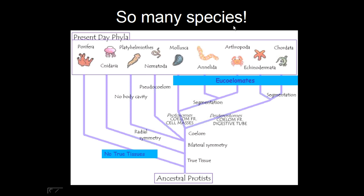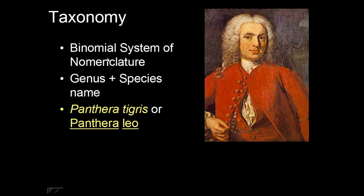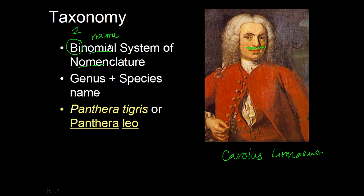There are just so many species that we have to find a way to systematize and group them together to make sense of why they are grouped that way. So let's look into taxonomy. This is Carolus Linnaeus, and he came up with the binomial system of nomenclature. 'Nomenclature' comes from the word 'nomen,' which means name — so nomenclature is the act of giving a name to something.